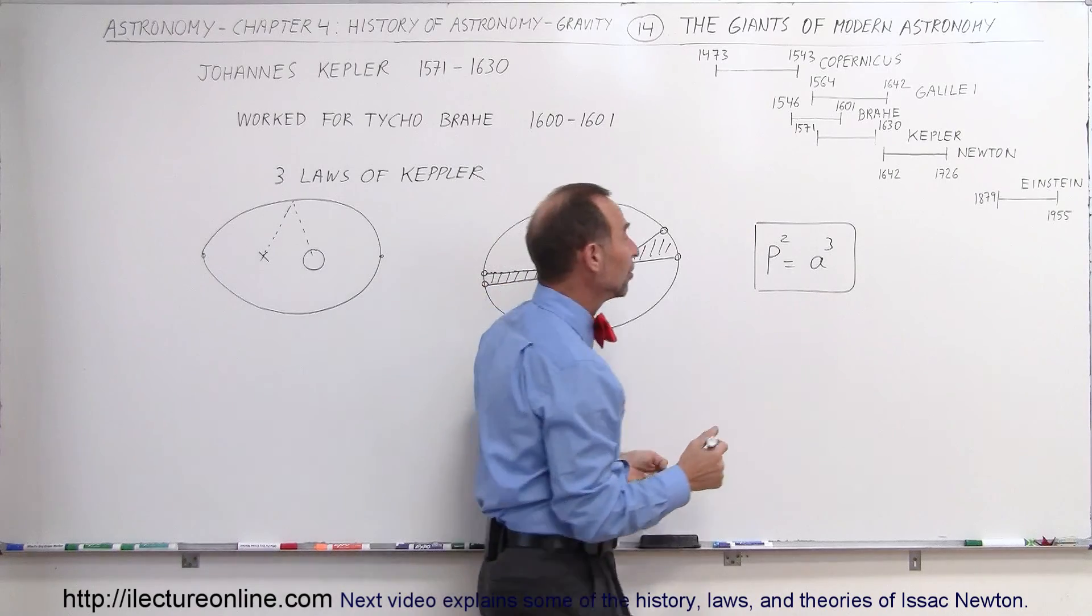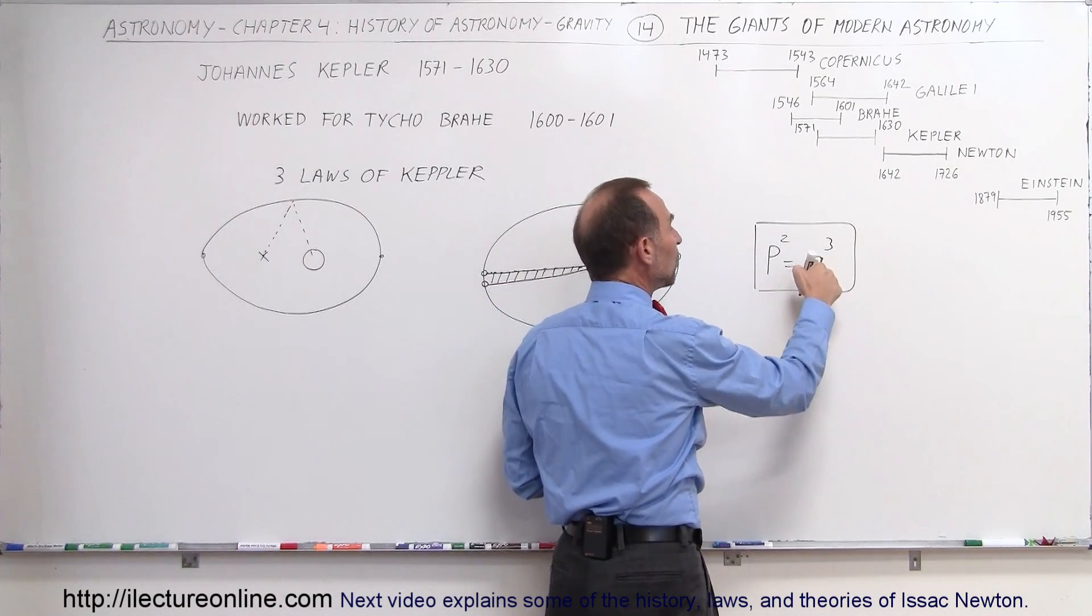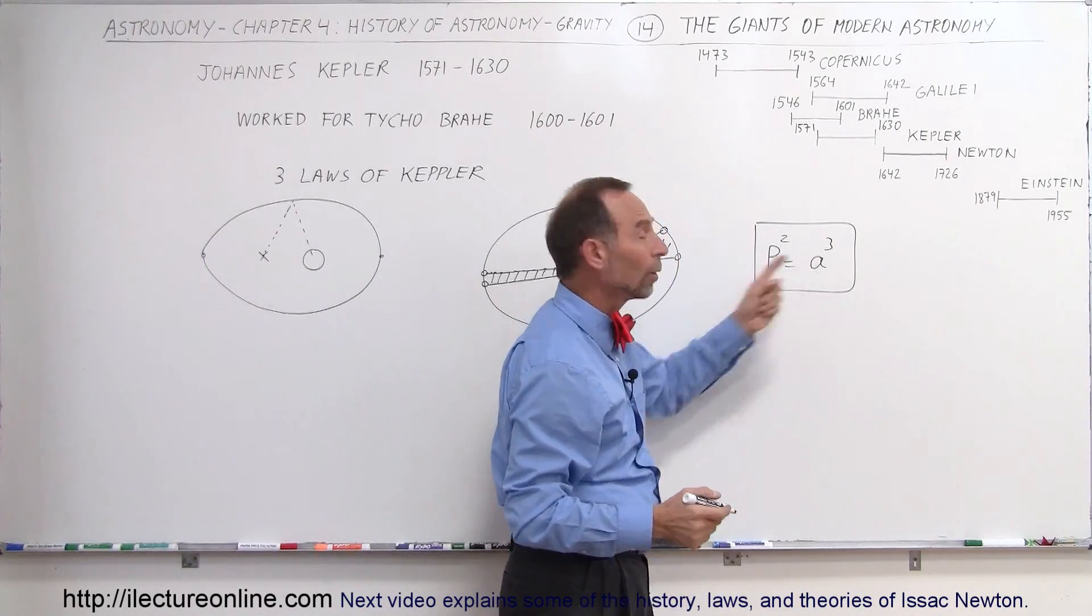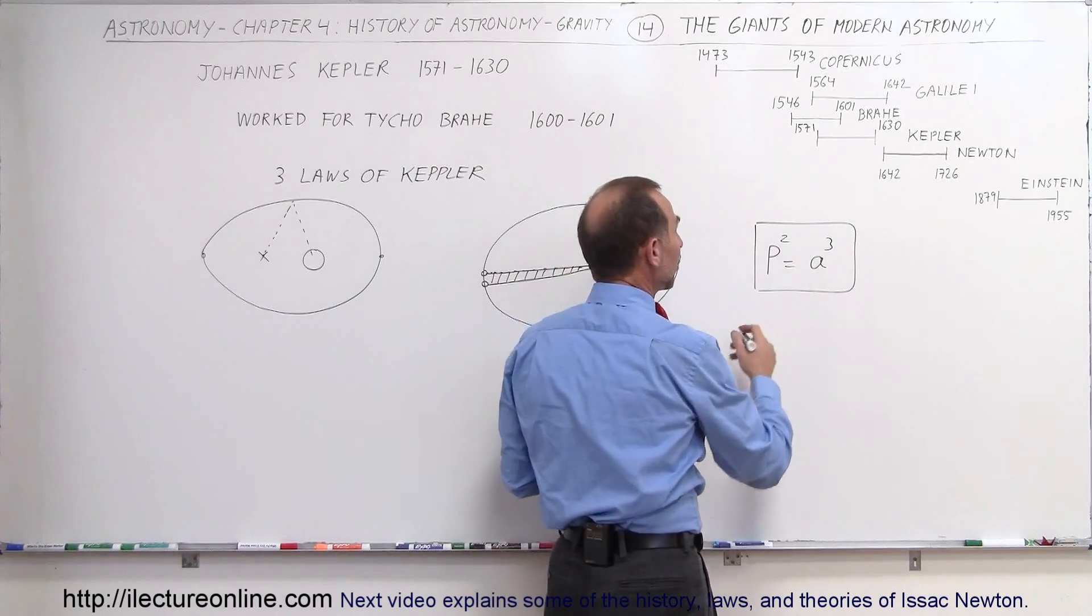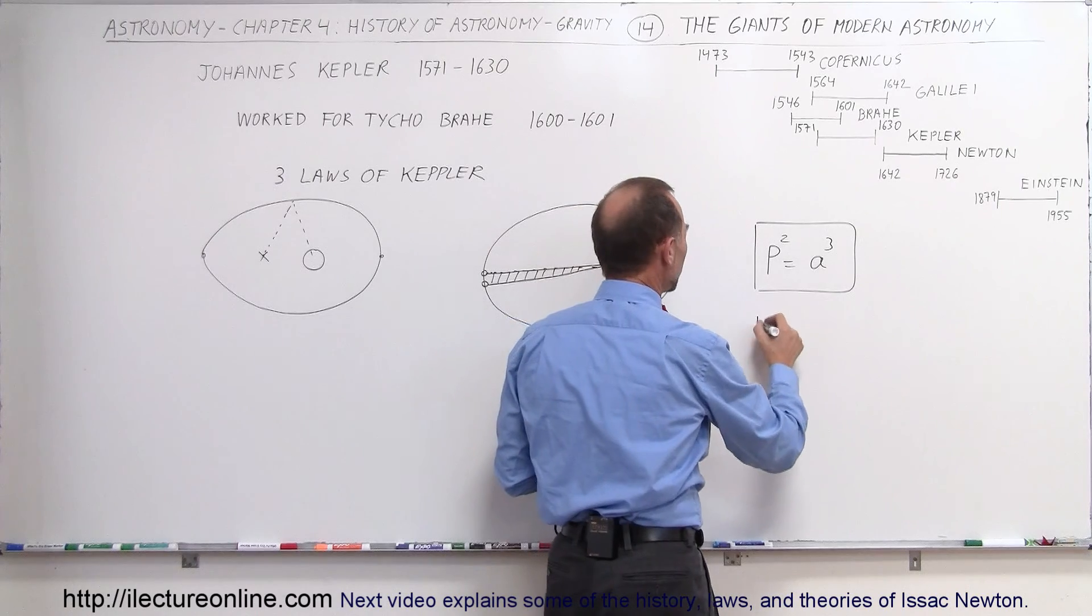For example, if you think of the period of the Earth as one year, and the distance between the Earth and the Sun is one astronomical unit, you can see that one squared equals one cubed. If you then imagine for a moment that the period, let's say the orbital period of Jupiter is about 11.3 years,